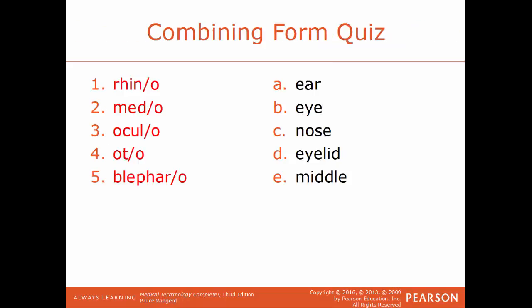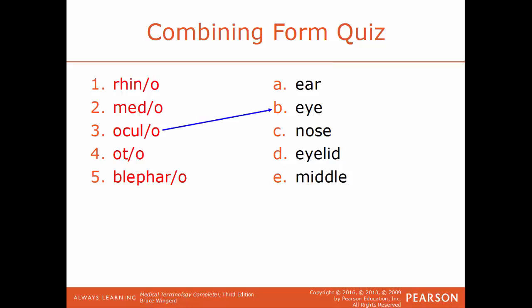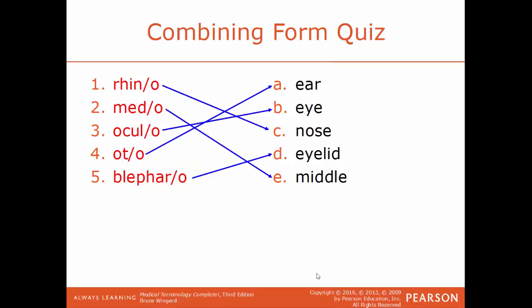We'll end our chapter with a combining form quiz. The terms on the left — rhin/o, medi/o, ocul/o, ot/o, or blephar/o — match up with either ear, eye, nose, eyelid, or middle. Rhin/o goes to nose. Medi/o goes to middle. Ocul/o goes to eye. Ot/o goes to ear. And blephar/o goes to eyelid. Here are all five terms for you to match with their definition. That brings us to the end of chapter number 14 on the special senses of hearing and vision. We will conclude our video series on medical terminology with our next video on chapter number 15.